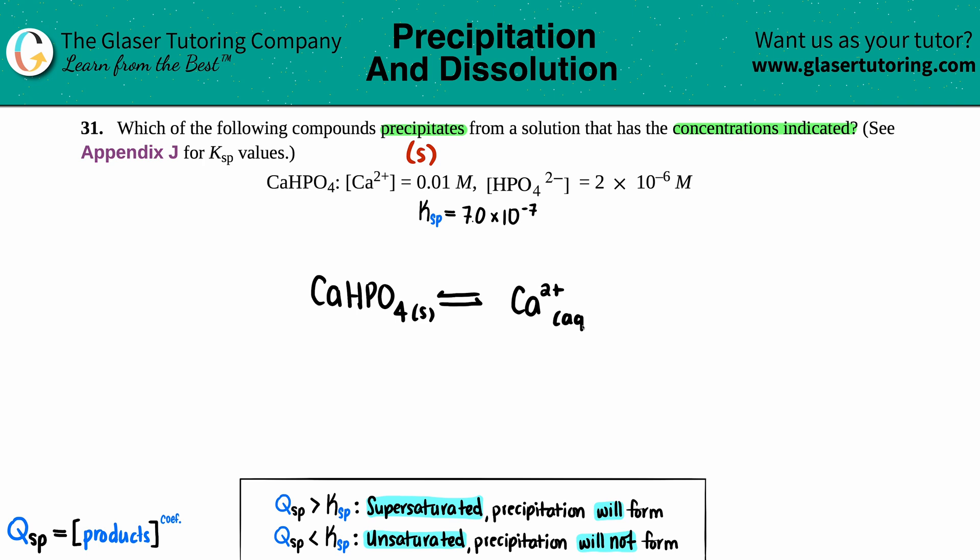Plus HPO4, that's also a charge, 2-, so that's also aqueous. It's all balanced already for us, so I'm just going to go in and put in our values. Calcium they told us was 0.01 molarity.